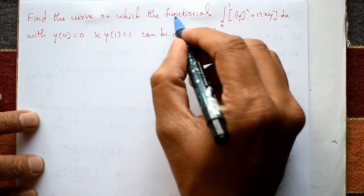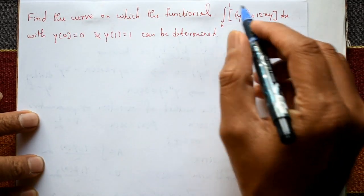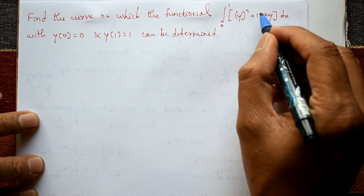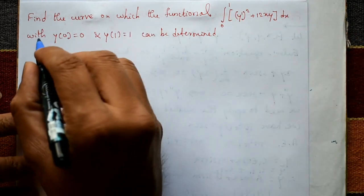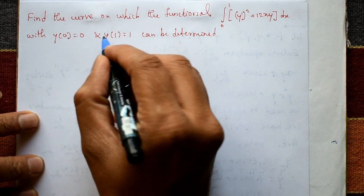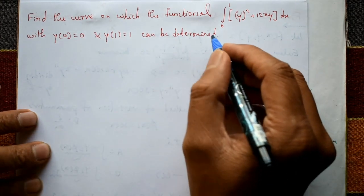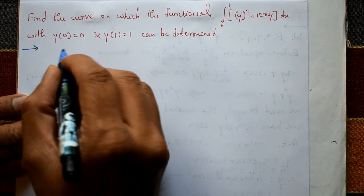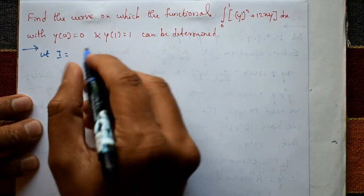Find the curve on which the functional integration of 0 to 1 of y' squared plus 12xy, with respect to x, can be extremized, given that y(0) = 0 and y(1) = 1. This problem is straightforward. Let I equal the integration from 0 to 1.